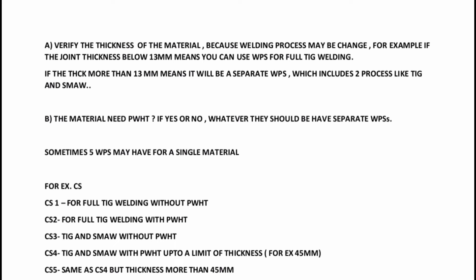Verify the thickness of the material because the welding process may change. For example, if the joint thickness is below 30 mm, you can use a WPS for full TIG welding. The first thing to know is the welding process. In WPS, there can also be two welding processes.